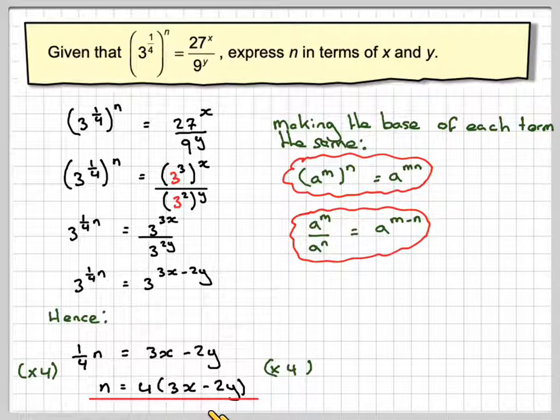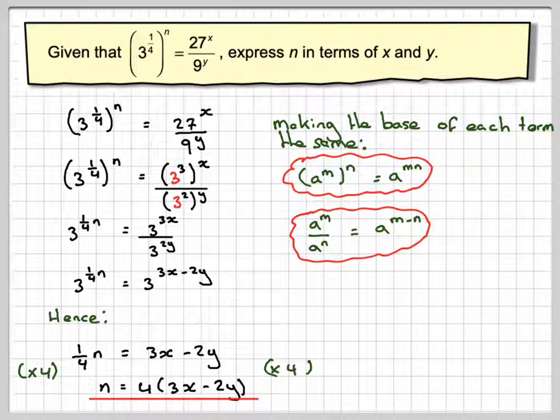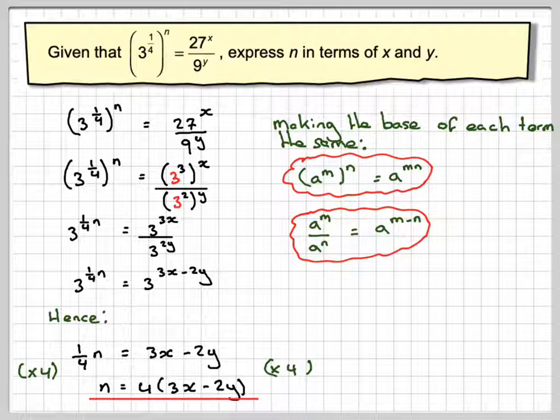Now, if you put 12x minus 8y, that will still be OK as well. So this has been a video to show you how to get a formula from using the rules of indices. I hope you've understood. And I thank you very much for watching.